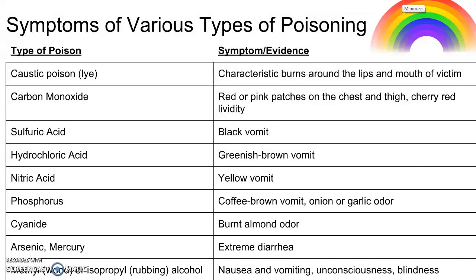The odors that show up: phosphorus has an onion or garlic odor. Cyanide has a burnt almond odor — the body will actually emit this odor after death. Arsenic and mercury cause extreme diarrhea. Anytime they put the word 'extreme' at the beginning of a symptom, that means worst possible case scenario. With extreme diarrhea, it means that by the time you've had the thought that you need to get to the bathroom, you've already gone in your pants. You're not leaving the bathroom for days.